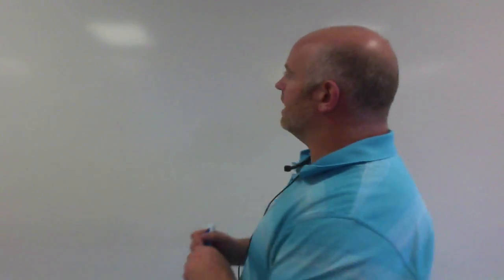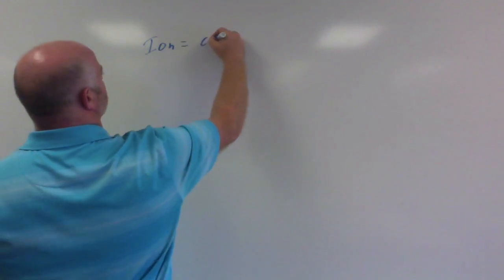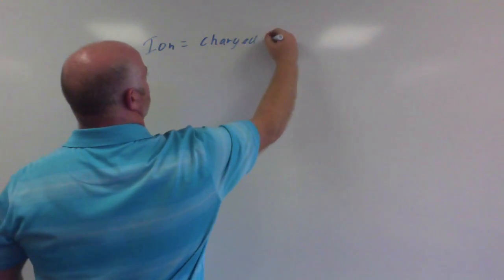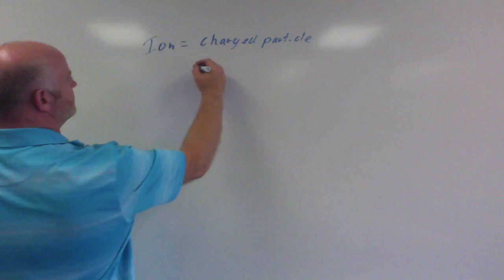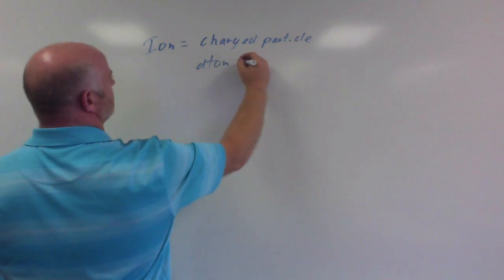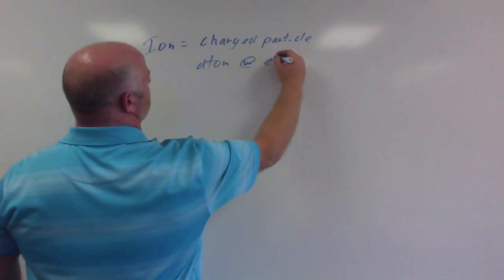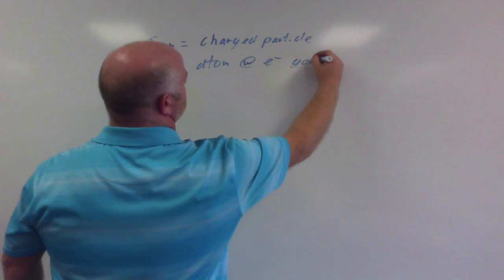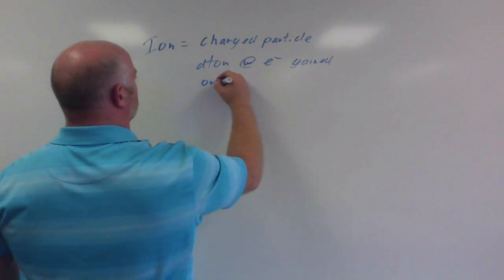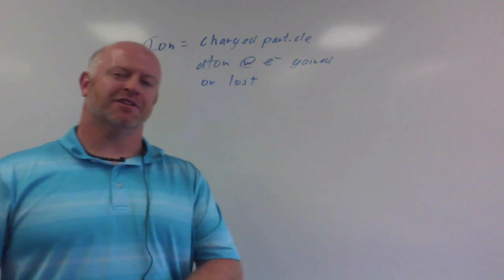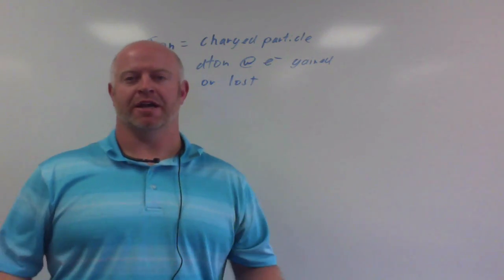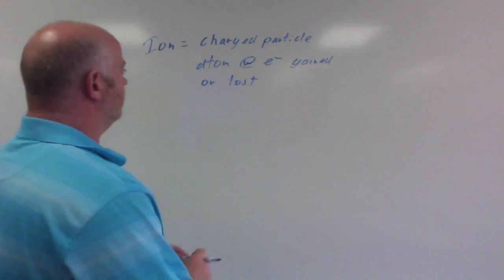So when we define the word ion, remember an ion is a charged particle. Basically it's an atom with electrons either gained or lost. So if an atom gains electrons or loses electrons, it becomes an ion or becomes a charged particle.